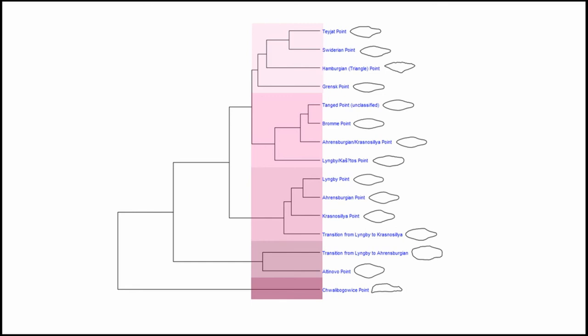We can also use the GMM approach to assess groupings through hierarchical clustering and start to look at differences between groups based on the distance between mean shapes. For example, in the middle of the dendrogram we can see the Bromme point — a widely classified artifact — matches many of the tanged points which have no classification, illustrating our difficulties in assigning artifacts to unambiguous units.